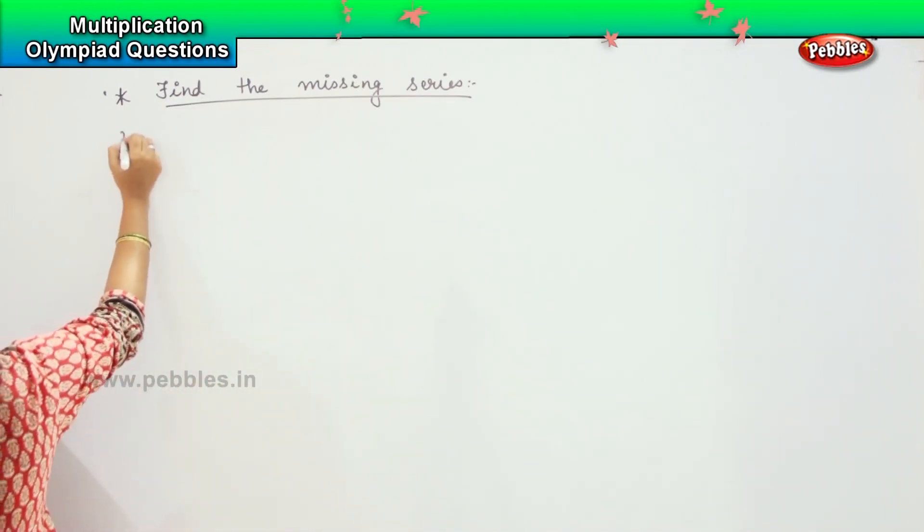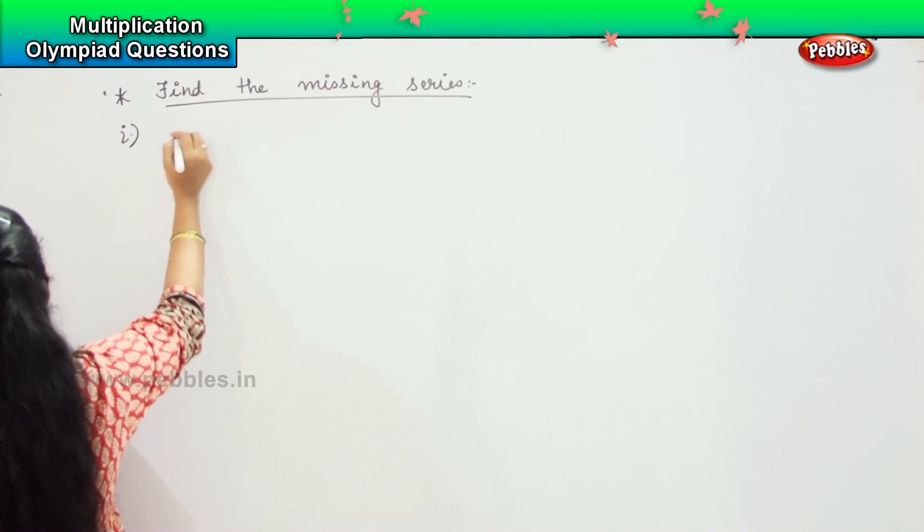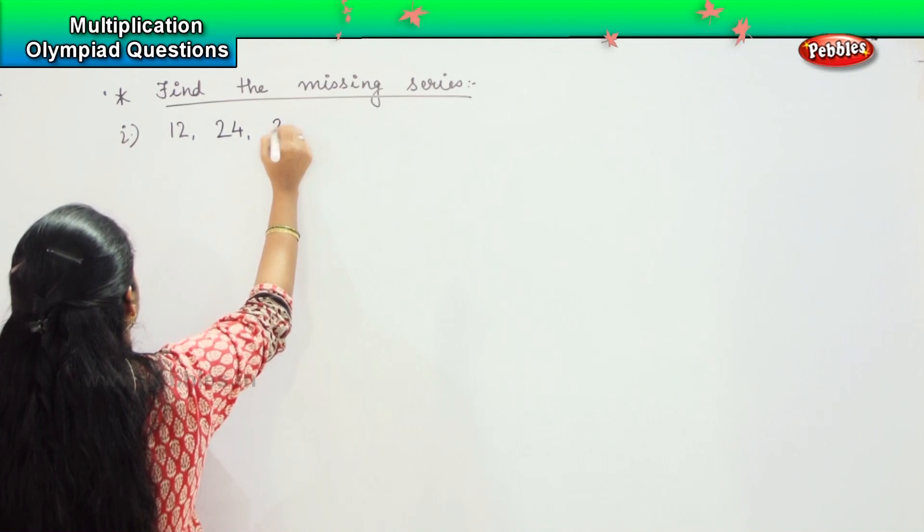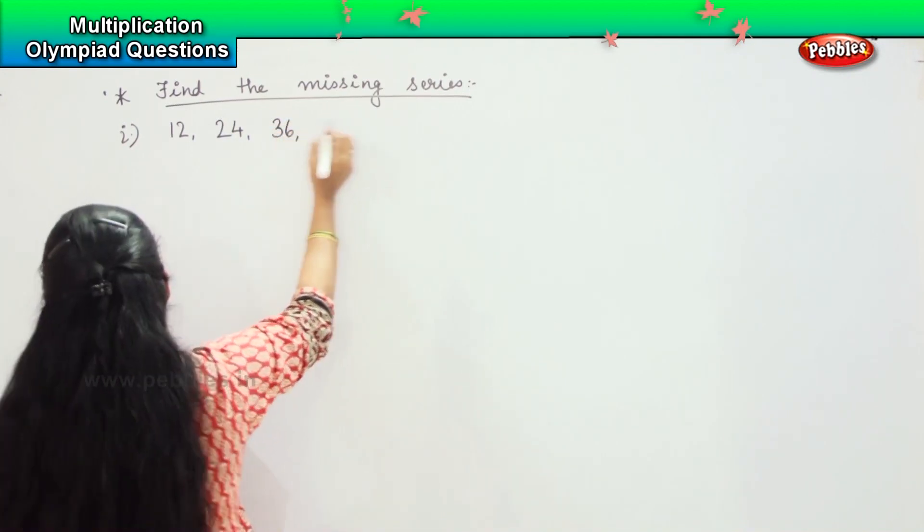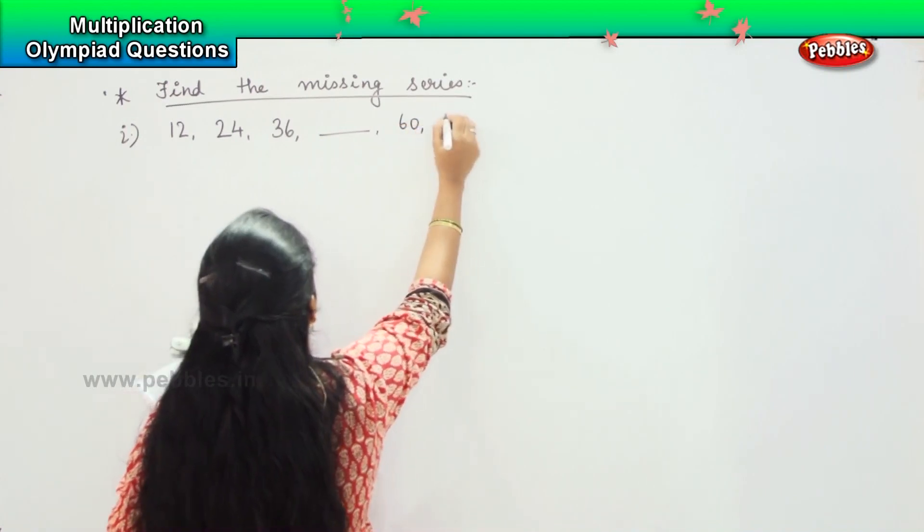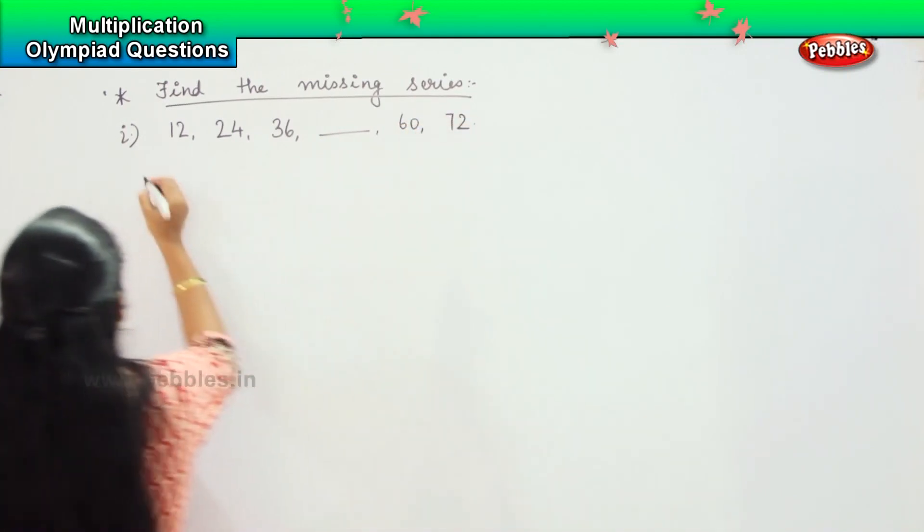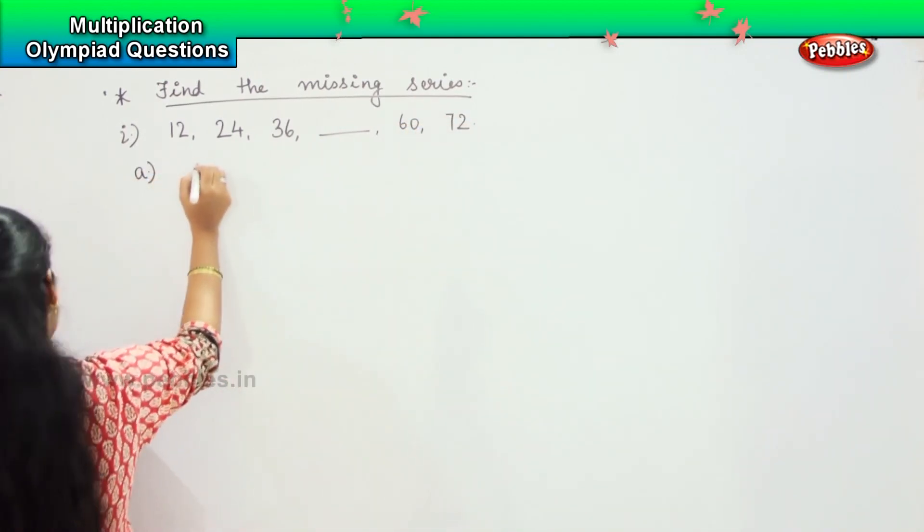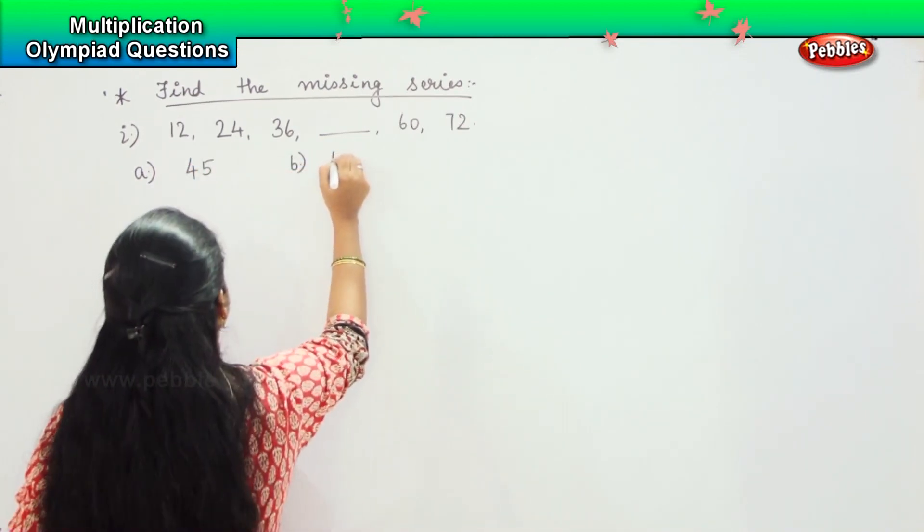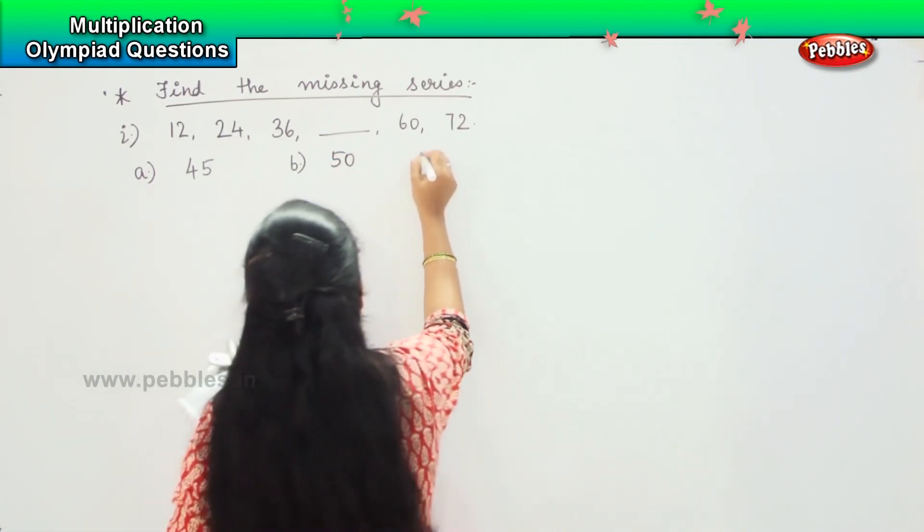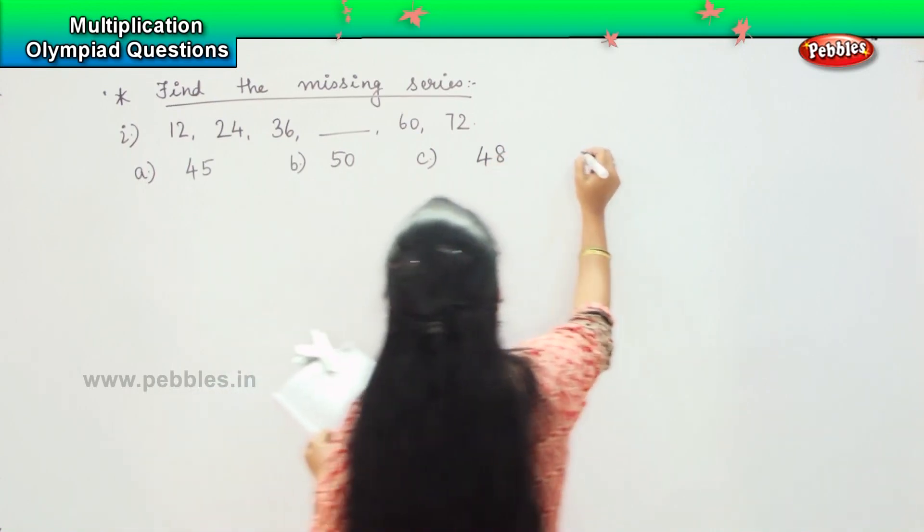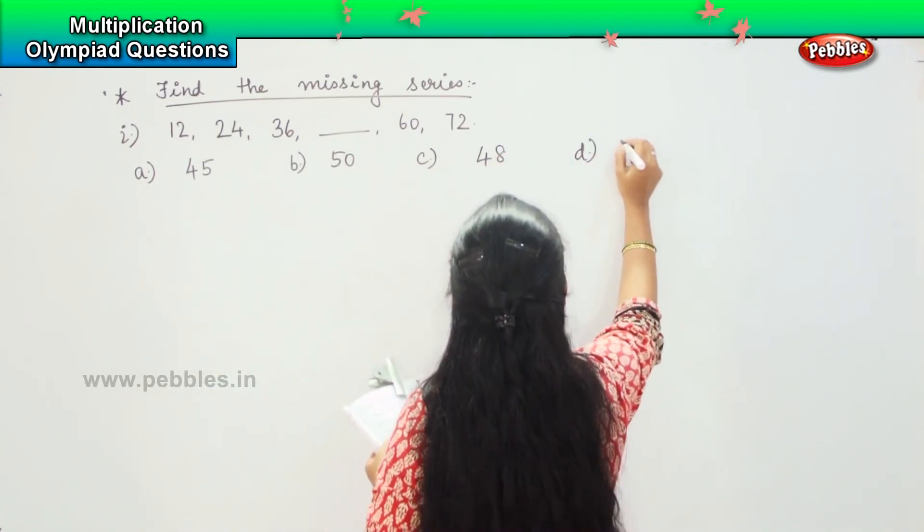The first one says 12, 24, 36, dash, 60, 72. Your options are A: 45, B: 50, C: 48, and D: 52.